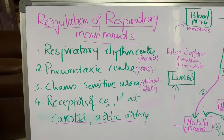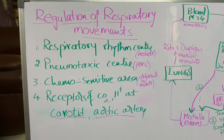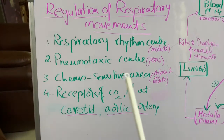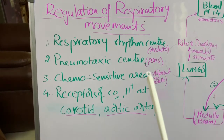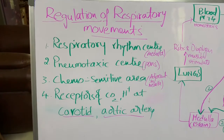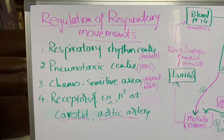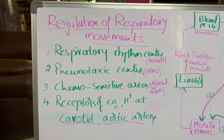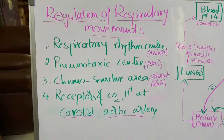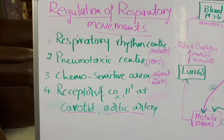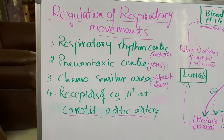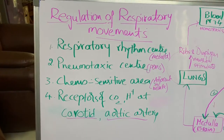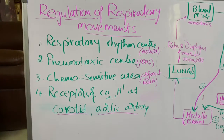The second center is the pneumotaxic center, which occurs in the pons of the brain. It reduces the duration of inspiration and controls the respiratory rate.